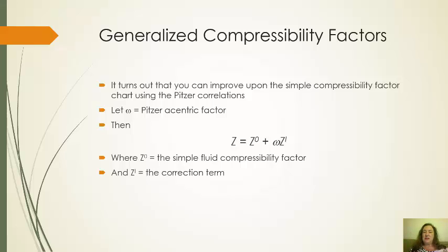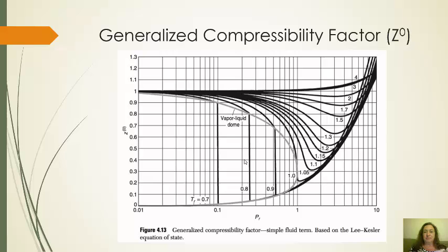The way we use this is the Pitzer acentric factor is going to take Z0, the compressibility factor that we found back in the old days using that other graph from Felder and Rousseau, and you add to that the acentric factor times a second Z factor. So this is going to be our correction. The sum of these two will be a better Z than we get from using just Z0. We've done Z0 in the past. We're going to add to this Omega Z1, a correction.